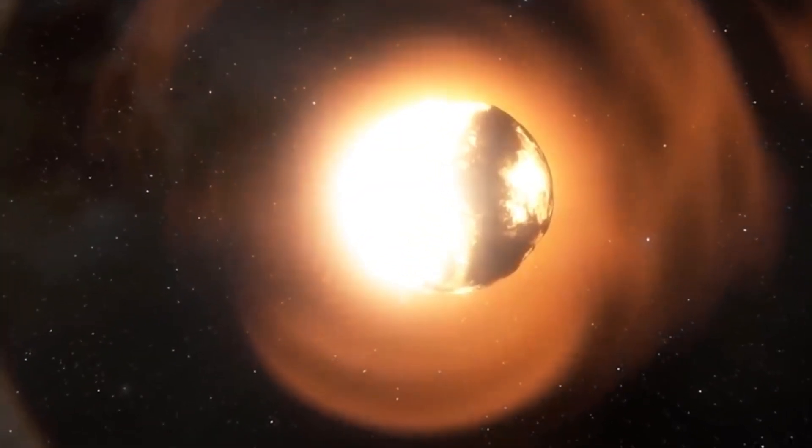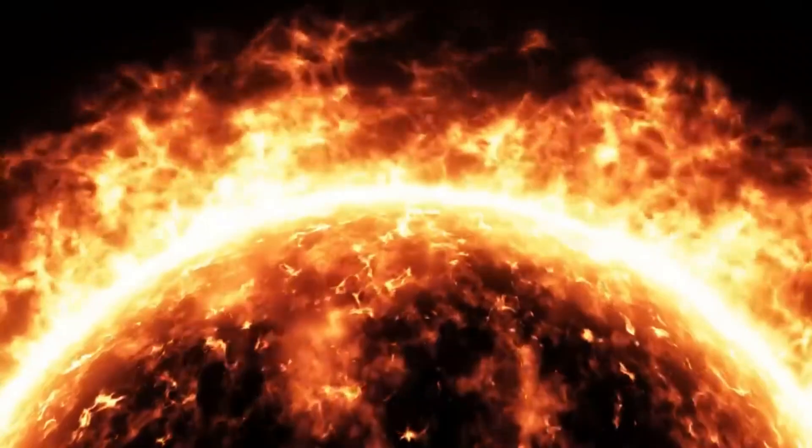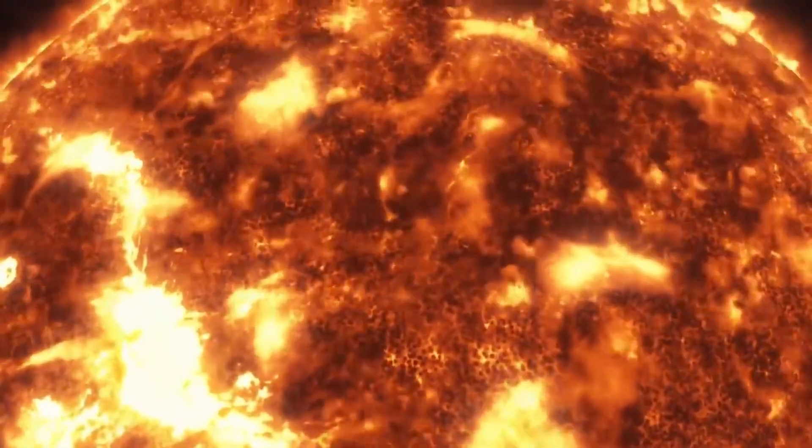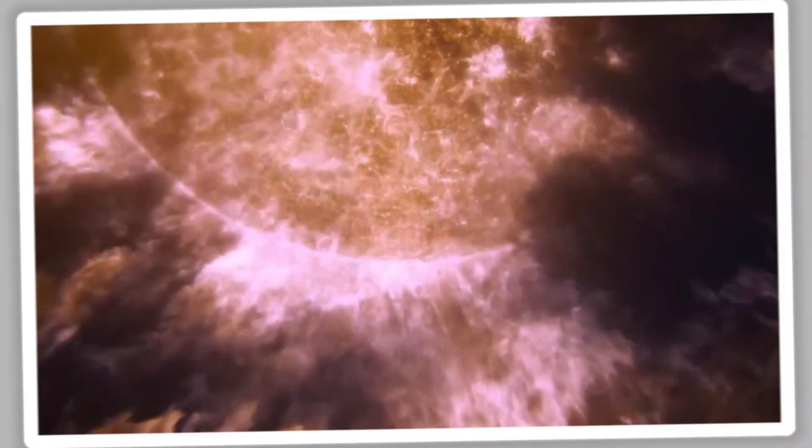This kind of behavior from a star has never been seen before. A coronal mass ejection, or CME, is when parts of the sun's upper atmosphere, called the corona, are ripped off. But the Betelgeuse SME threw out 400 billion times as much mass as a normal CME.